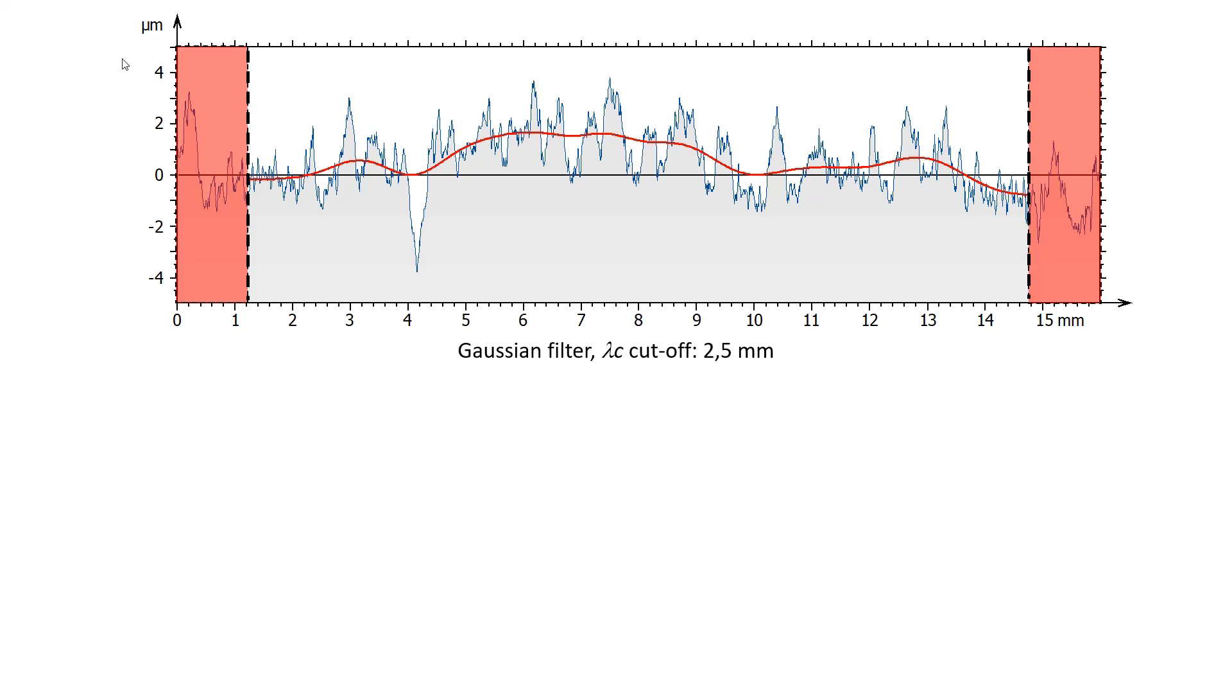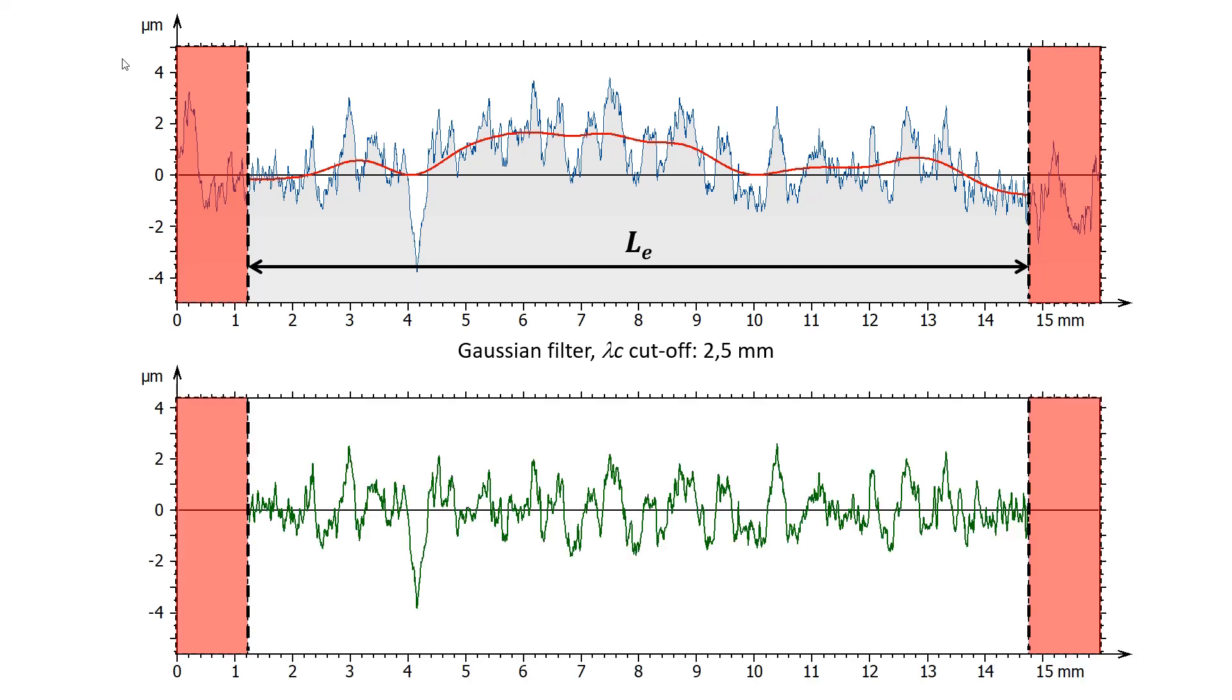The Gaussian filter, here with a cutoff of 2.5 mm, being subject to end effects, the filtered profile is cut on each edge by a length equal to half a cutoff, or sometimes one cutoff. The resulting length is called the evaluation length. The roughness profile is calculated by subtracting the waviness profile from the primary profile. It is therefore also shorter by half a cutoff at each end.